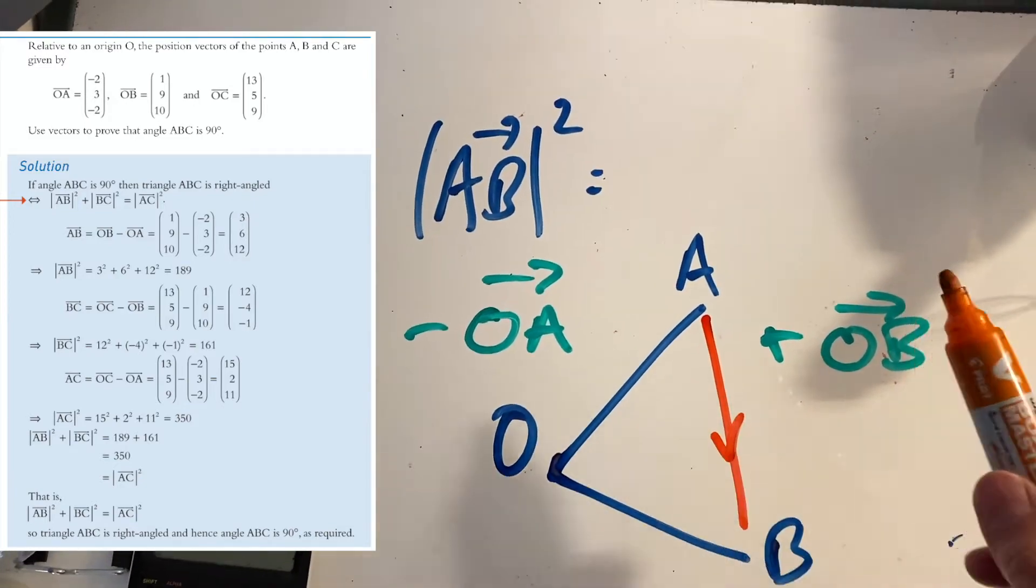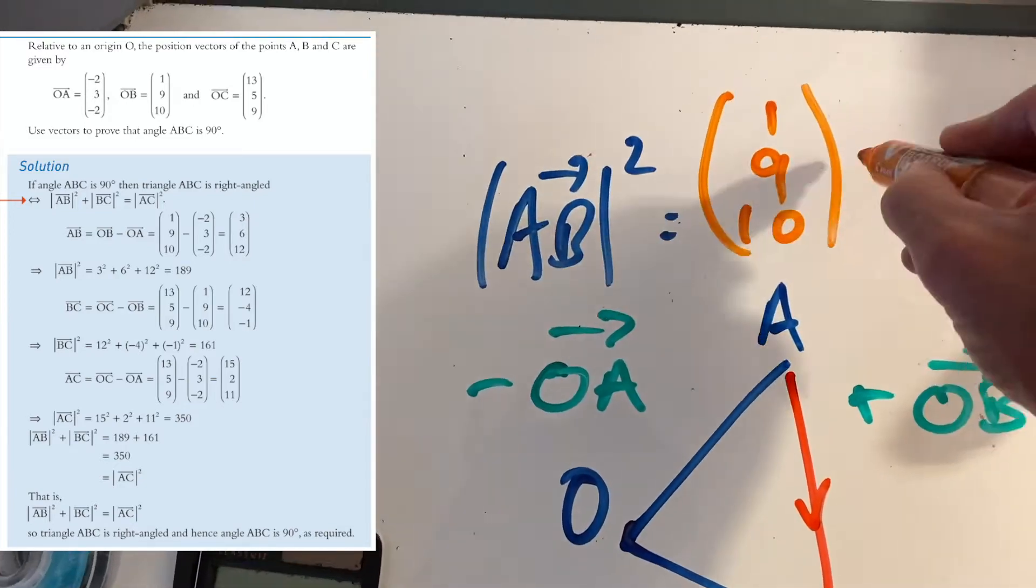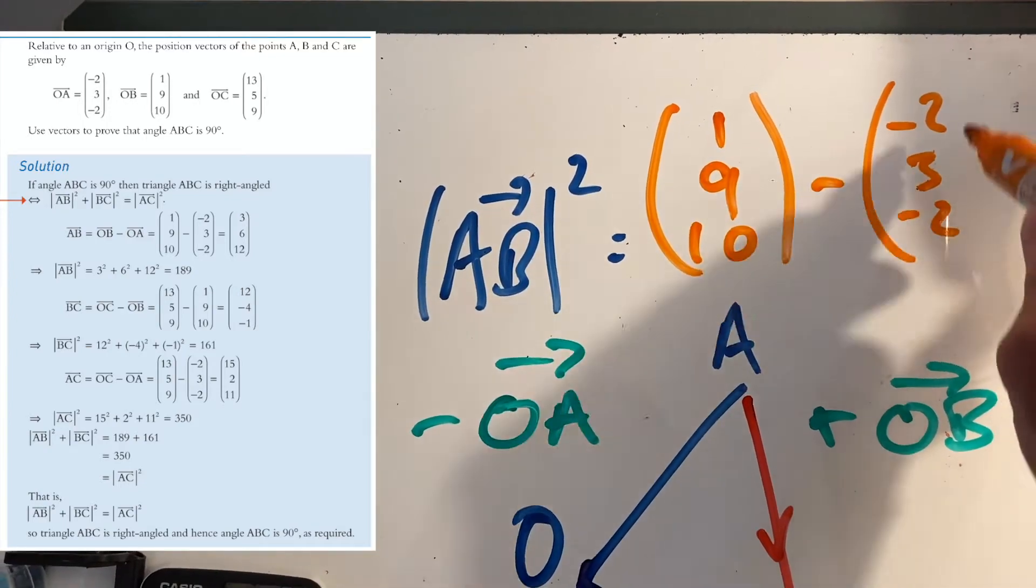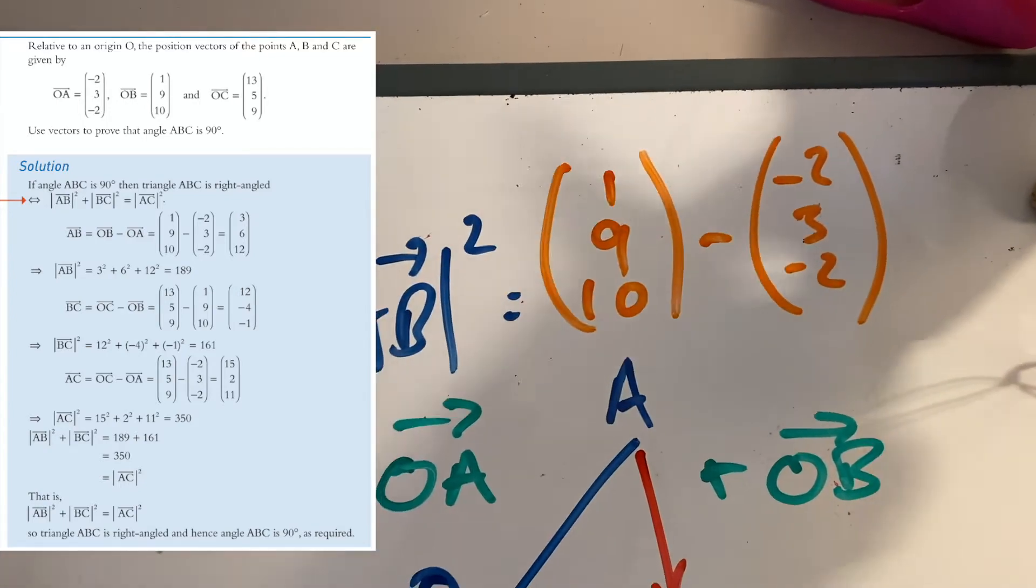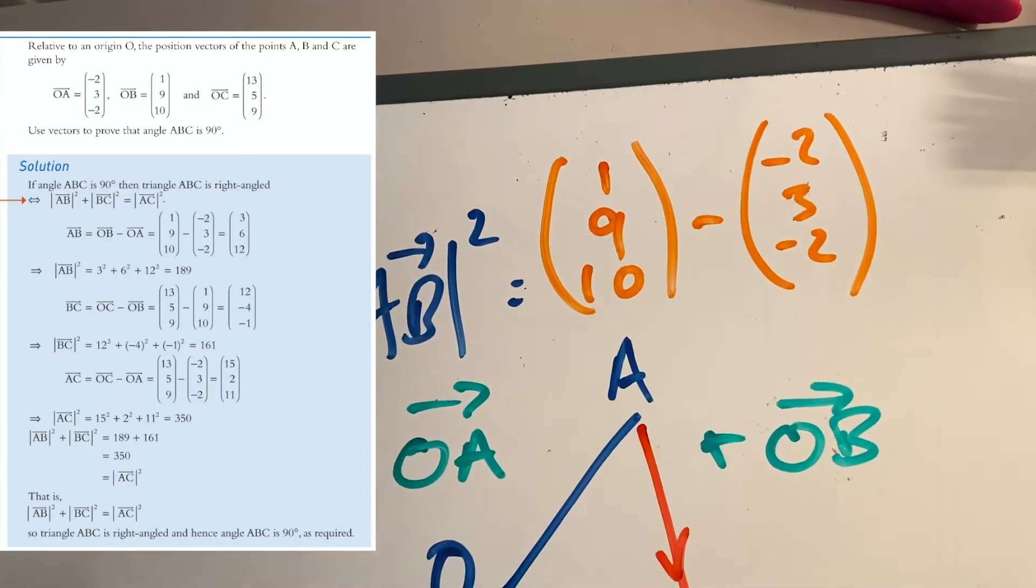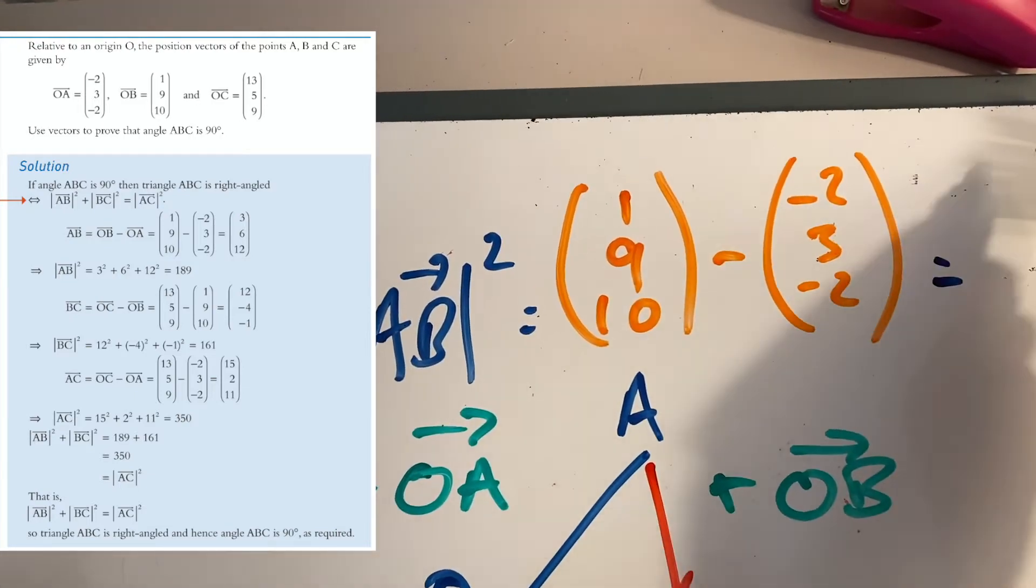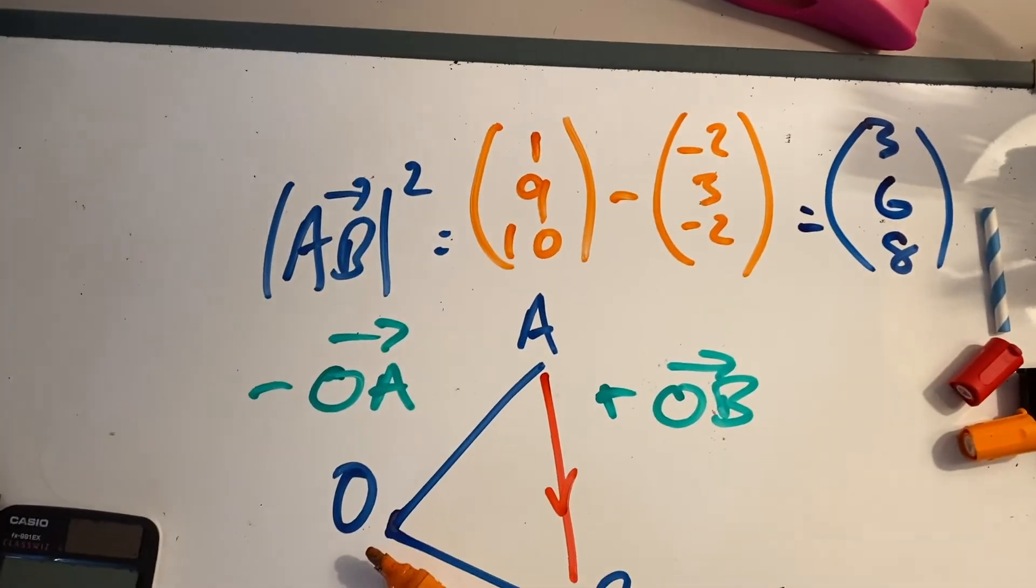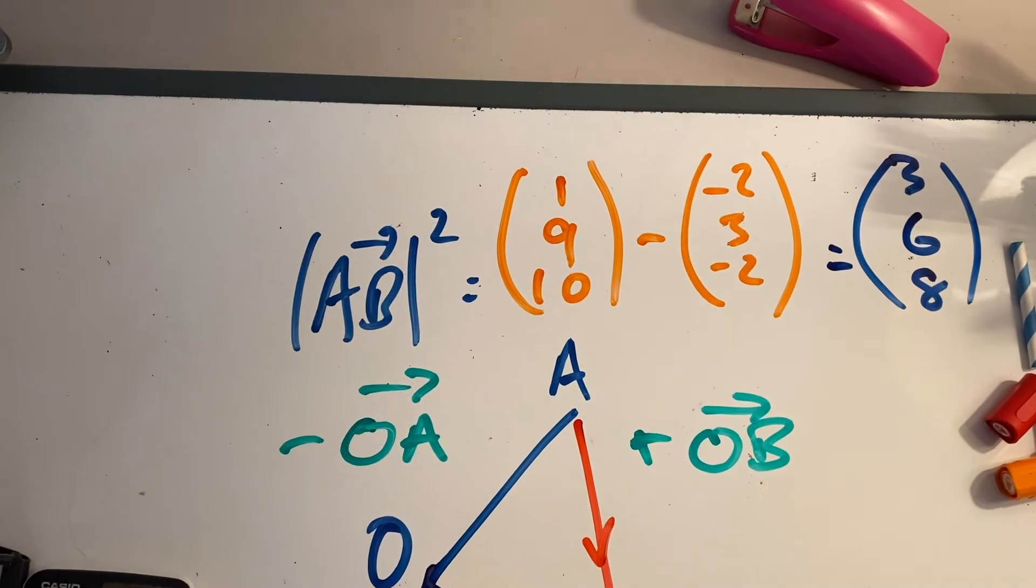So I'm going to do OB first: (1, 9, 10) minus (-2, 3, -2). Then we can see what that equals. Hopefully you can see that equals (3, 6, 8). So that is our vector AB.